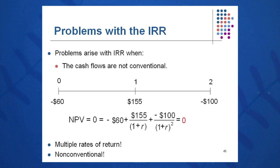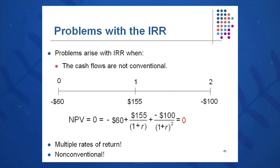Problems can arise with the IRR, so it has some detriments to be careful of — especially if we have non-conventional cash flows, which go minus, plus, minus. The CFO doesn't like to see this. She likes to see a minus cash outflow today, then plus, plus, plus. If you come in with cash flows of minus, plus, minus, she will be suspicious right away.